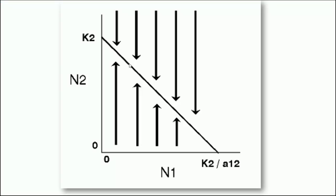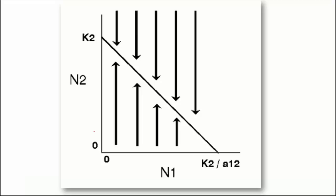Now we'll see how to predict the outcome of a competition using the Lotka-Volterra idea. In this graph, we have N1 on the x-axis and N2 on the y-axis. N1 is the initial number of individuals for species 1, and N2 is the initial population size for species 2. The carrying capacity K can be calculated based on the total number of individuals supported by the resources provided by the environment.